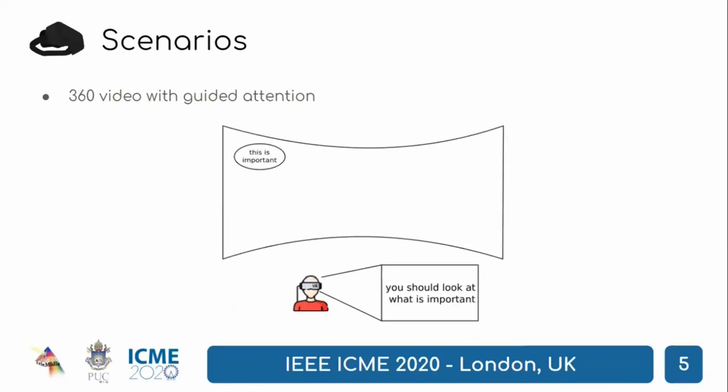In the third scenario, 360 video with guided attention, the 360 video has a recommended region to look at. Whenever the user is not looking at the recommended region, there could be elements to guide his attention. Besides visual cues, spatial audio cues are also important in virtual environments and can help in guiding the user's attention.